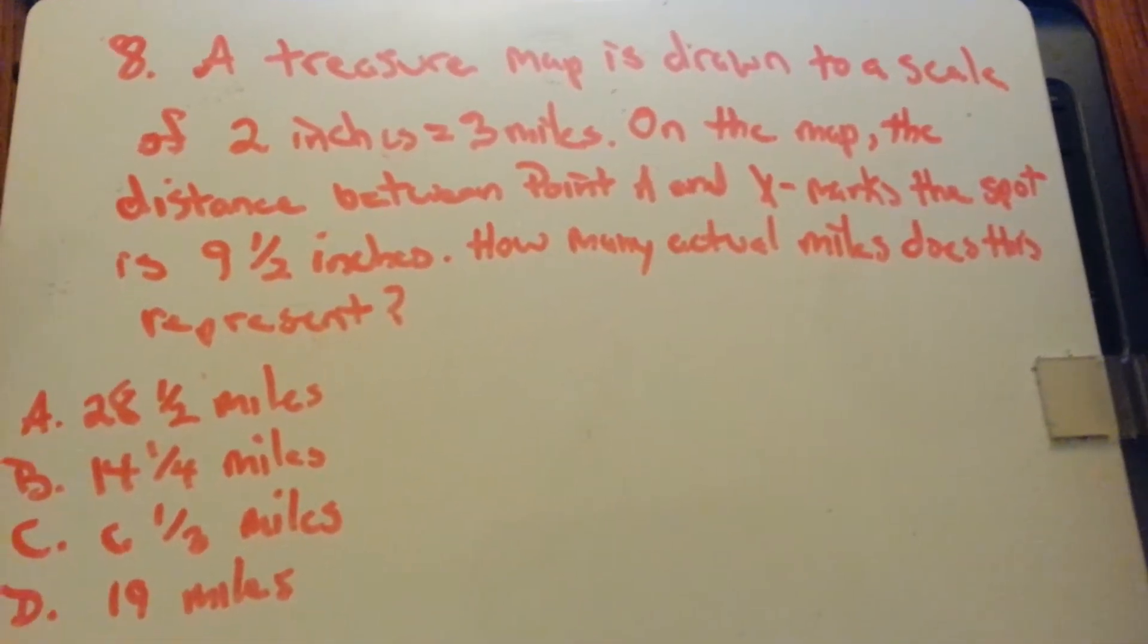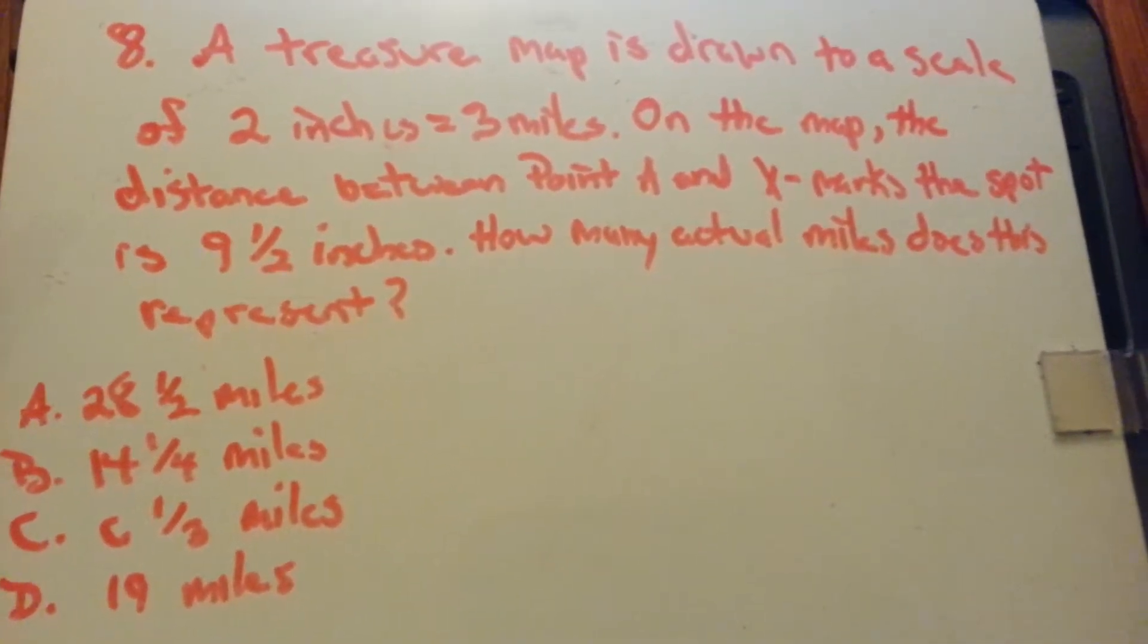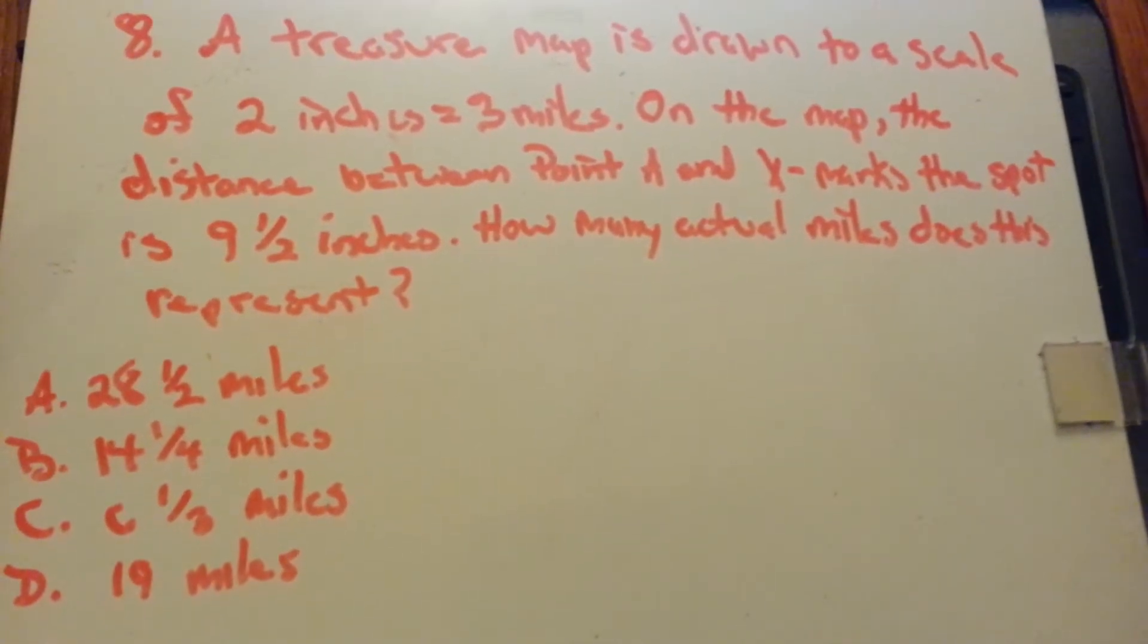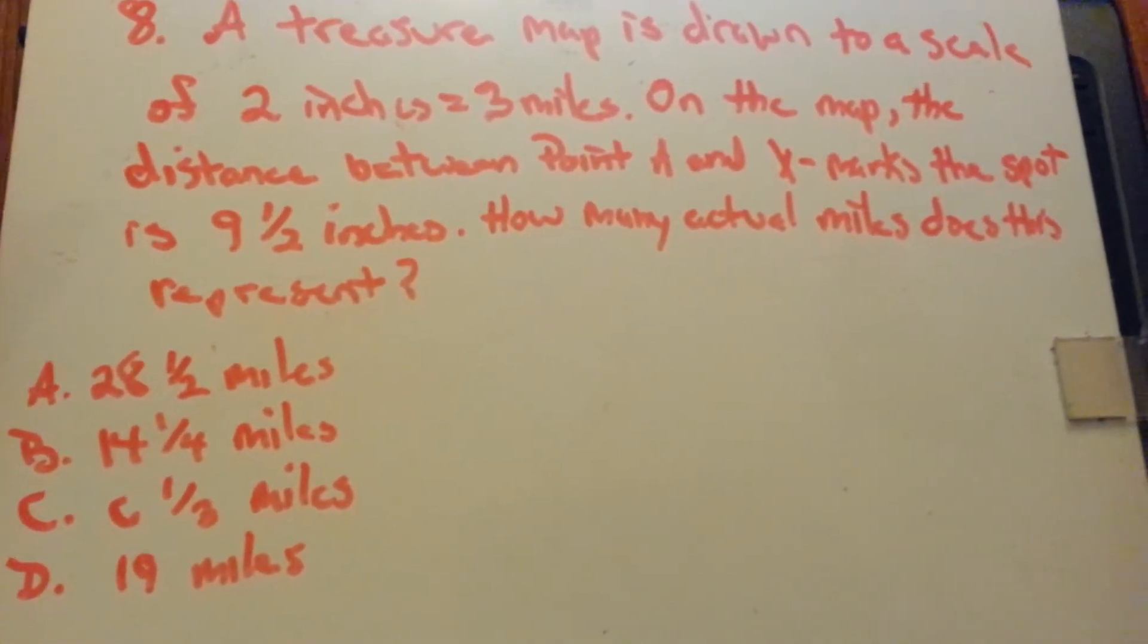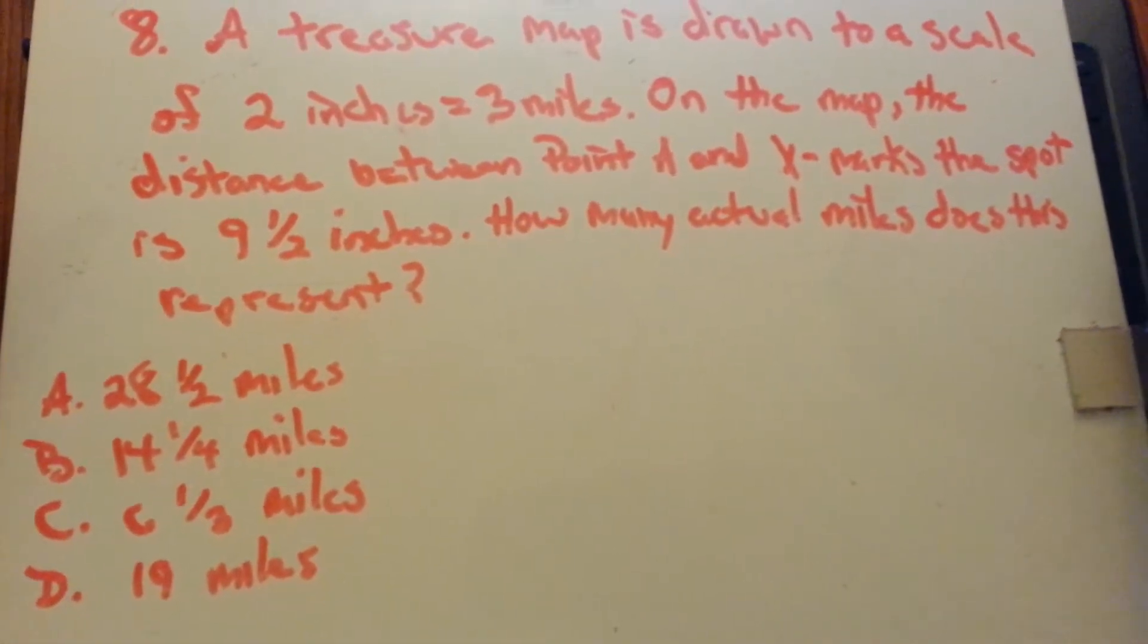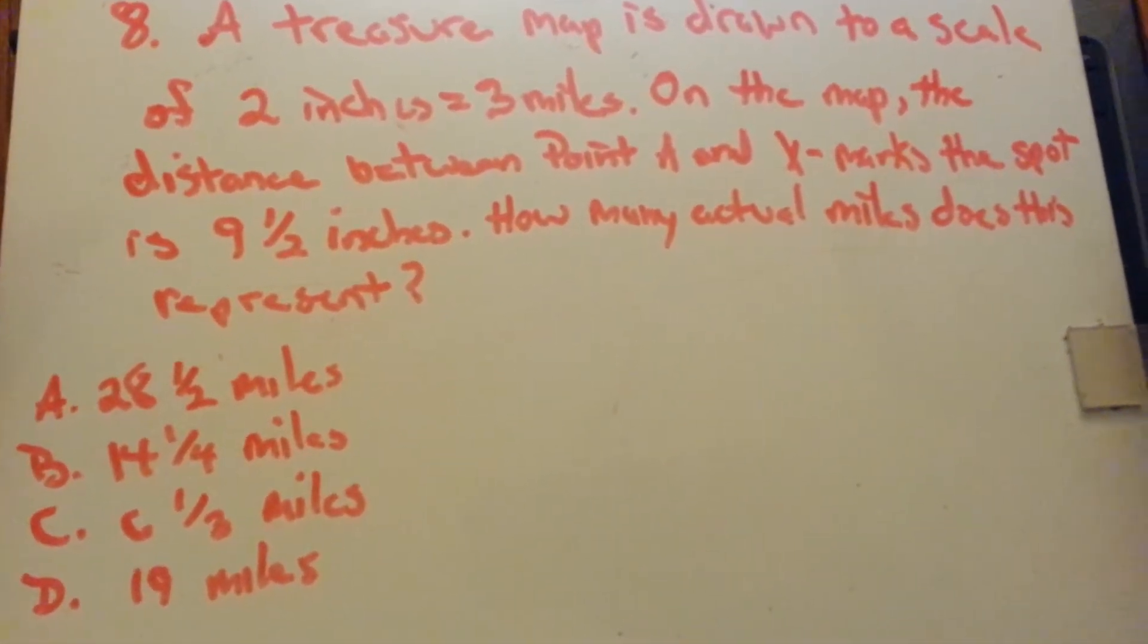A treasure map is drawn on a scale of 2 inches equals 3 miles. On the map, the distance between point A and the X marks the spot is 9.5 inches. How many actual miles does this represent?